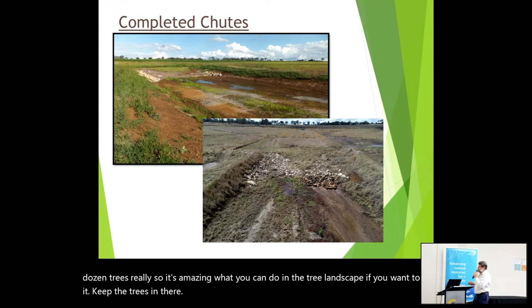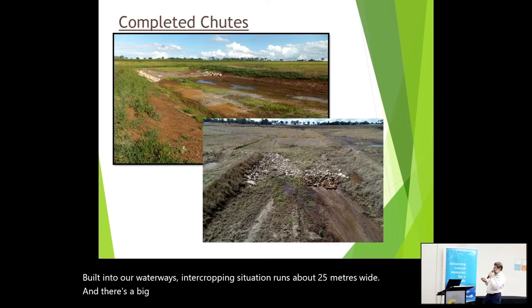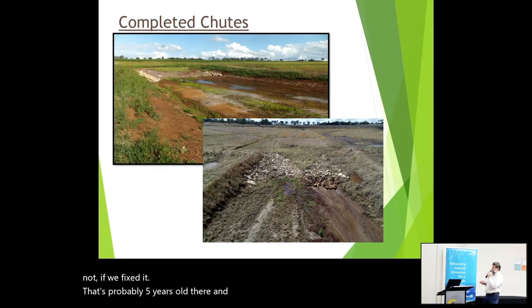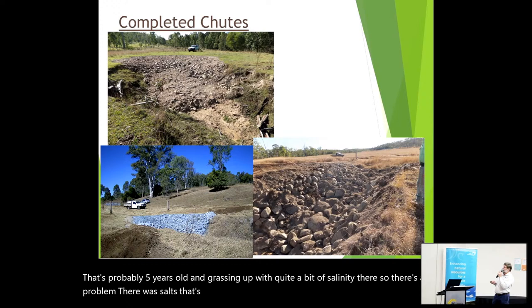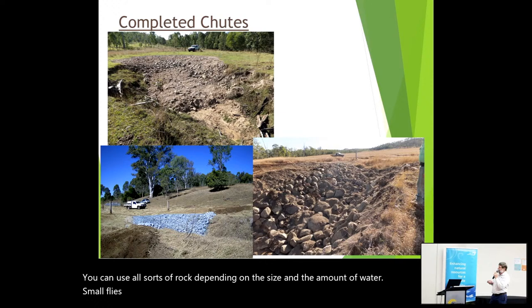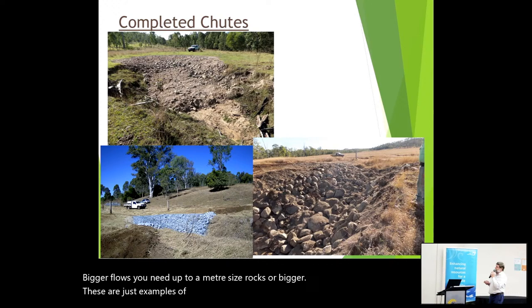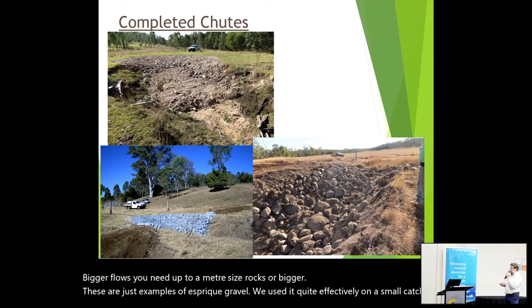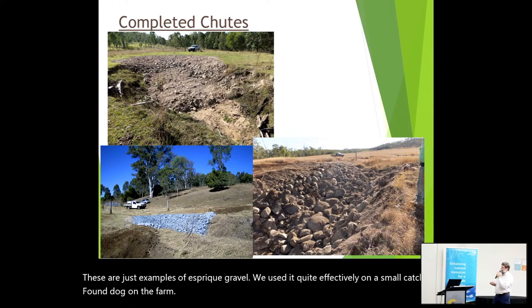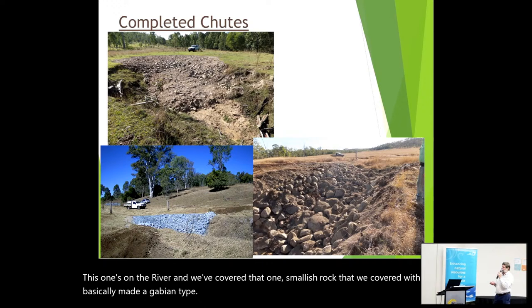Here are some chutes built into waterways in a cropping situation. This one's about 25 metres wide with a big 30-megalitre dam just above it. That's probably five years old and grassing up, but there's quite a bit of salinity there — that's why it hasn't grassed up as well as some would. You can use all sorts of rock depending on size and amount of water. For small flows you can use smaller rock; for bigger flows you need up to a metre-size rocks or bigger. That's creek gravel used quite effectively on a small catchment. On the Mary River we used a smallish rock but covered it with wire — basically a gabion-type structure — to stop floodwaters sucking out the soil.